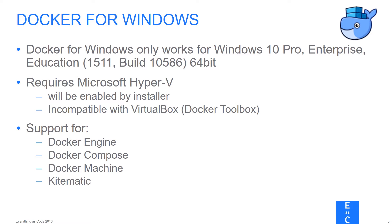Docker recently announced the stable release version for Docker for Windows. But to actually use it, you have to fulfill some requirements. One of these requirements is that you have to run a machine with Windows 10 Pro, Enterprise, or Education with the November update. Additionally, the machine needs to be 64-bit.